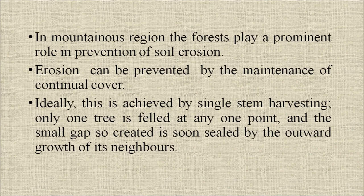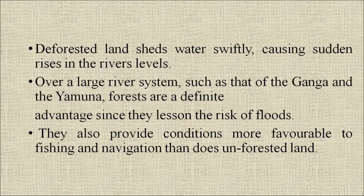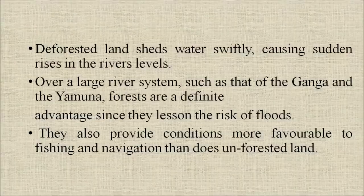Erosion can be prevented by the maintenance of continual cover; ideally this is achieved by single-stem harvesting, where only one tree is felled at any one point and the small gap created is soon sealed by the outward growth of its neighbors. Deforested land sheds water swiftly, causing a sudden rise in river level. Over a large river system such as the Ganga and Yamuna, forests are a definite advantage since they lessen the risk of floods and provide conditions favorable to fishing and navigation.